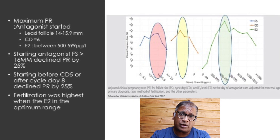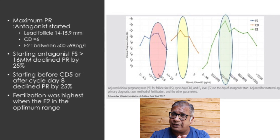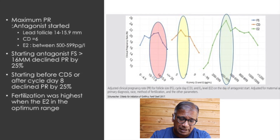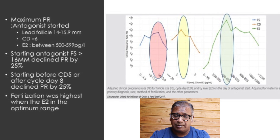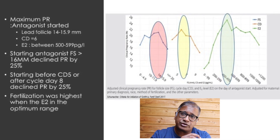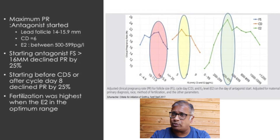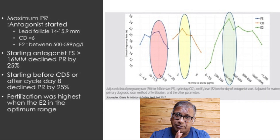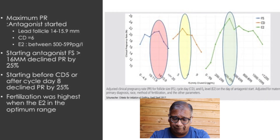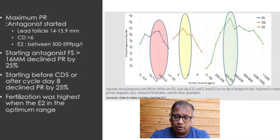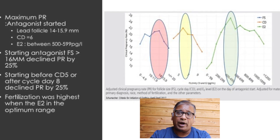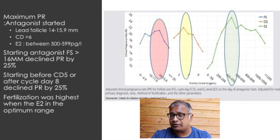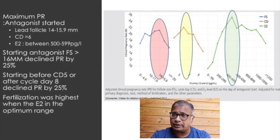If you start an antagonist after the follicle size was 16 mm, pregnancy rates dropped by 25%. If you started before day 5 or after day 8, pregnancy rates also declined.